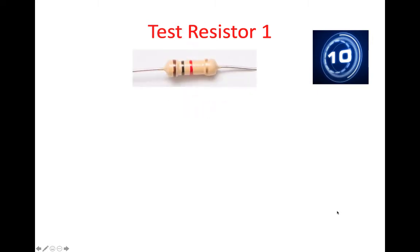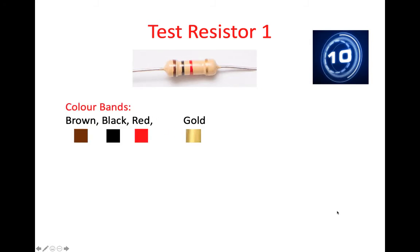Test resistor one. Here's a photo of the resistor, and the colour codes are brown, black, red, and gold. You have 10 seconds to determine the resistance. Your time starts now.